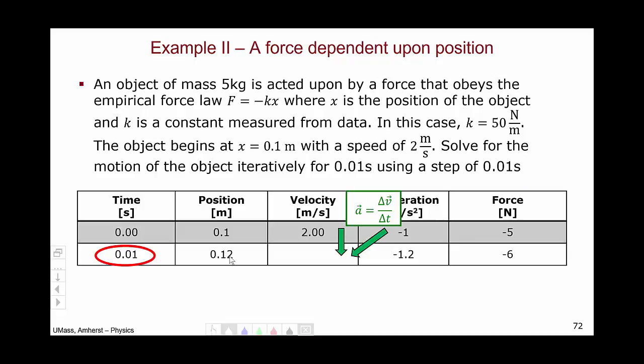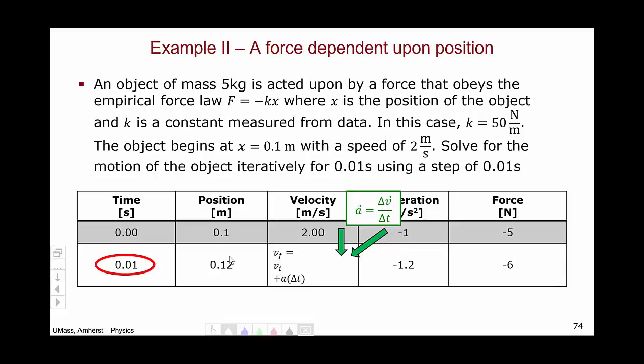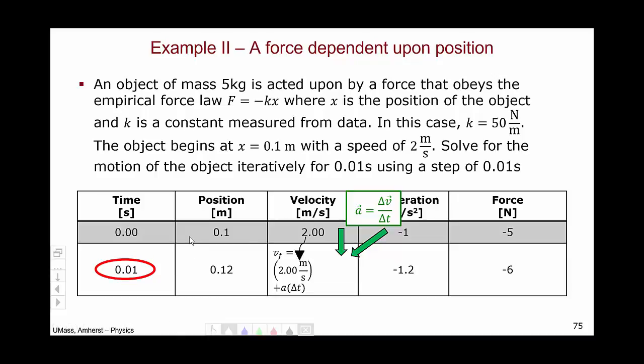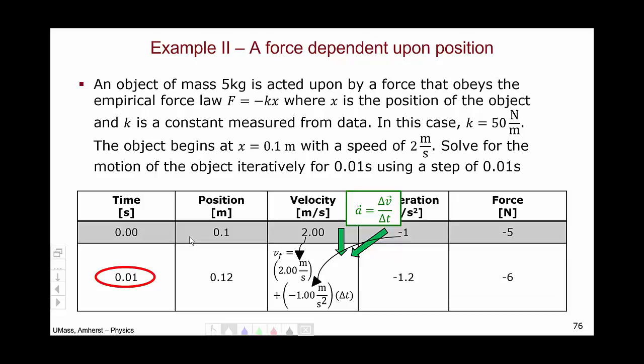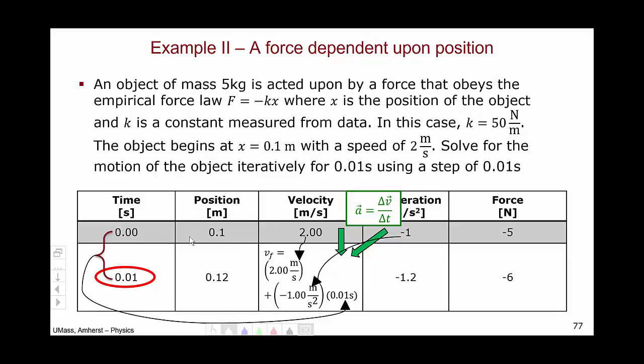Finally, we have to deal with the velocity. And we use the definition of acceleration, expanded into this typical algebraic form. And we look at substituting our numbers. The initial velocity over this interval is 2. So we substitute 2 meters per second. Our initial acceleration is negative 1 meters per second squared. And our delta t is 0.01 seconds.